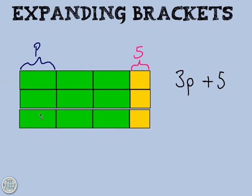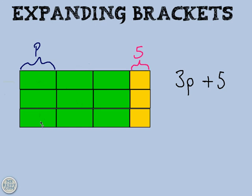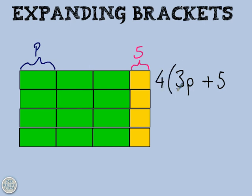And if I times it by 4, it would look like that. So how could I write that algebraically? Well, that would look like this: 4 brackets 3P plus 5. And that stands for 4 lots of the whole lot of brackets.